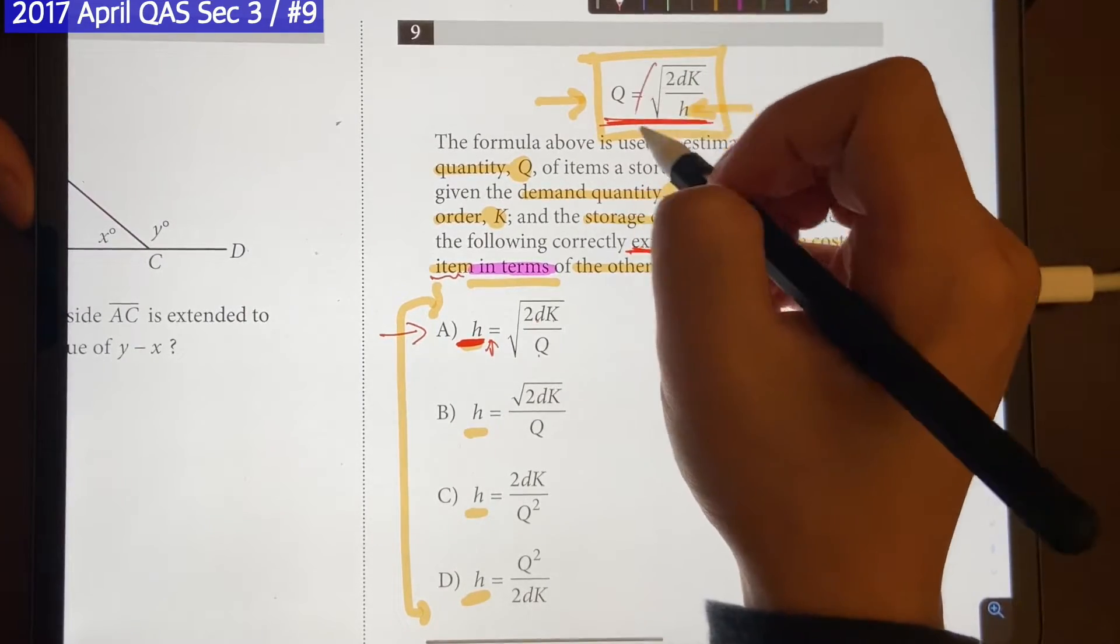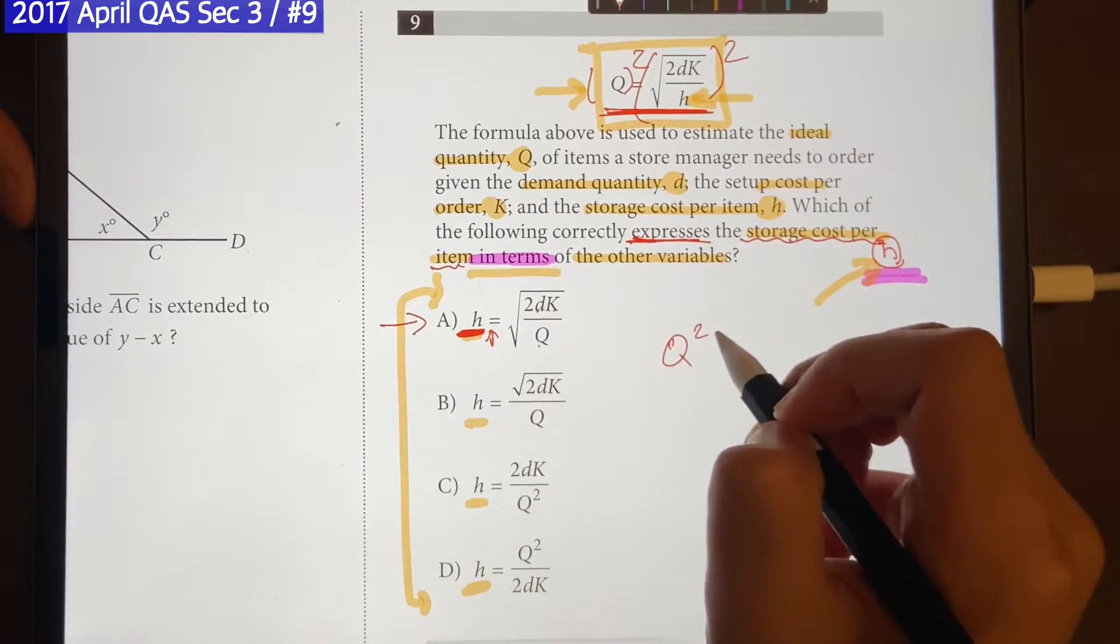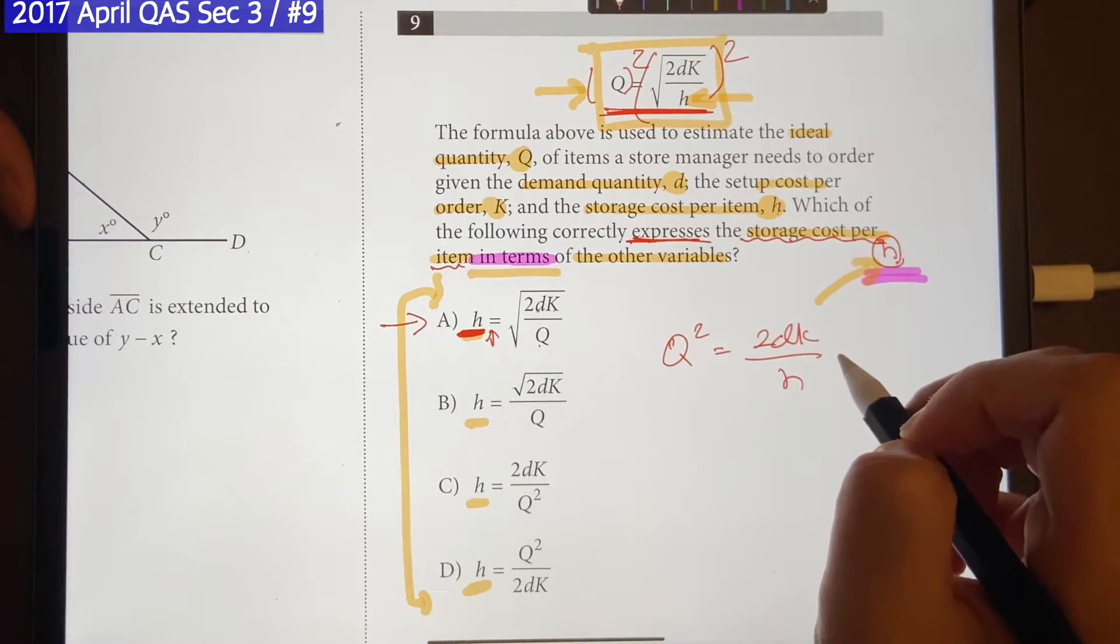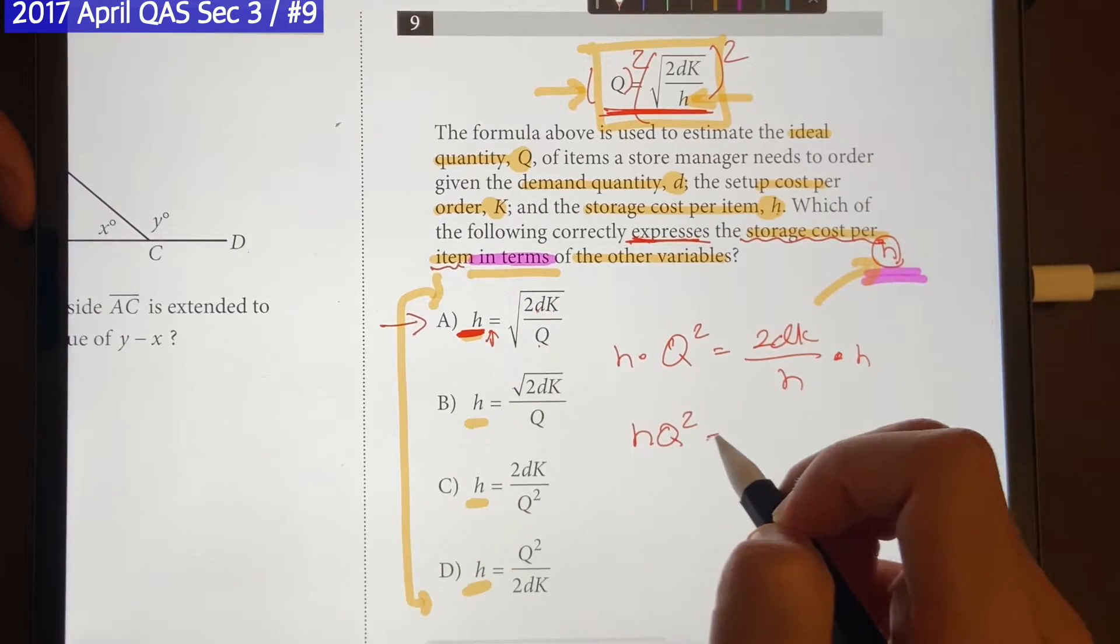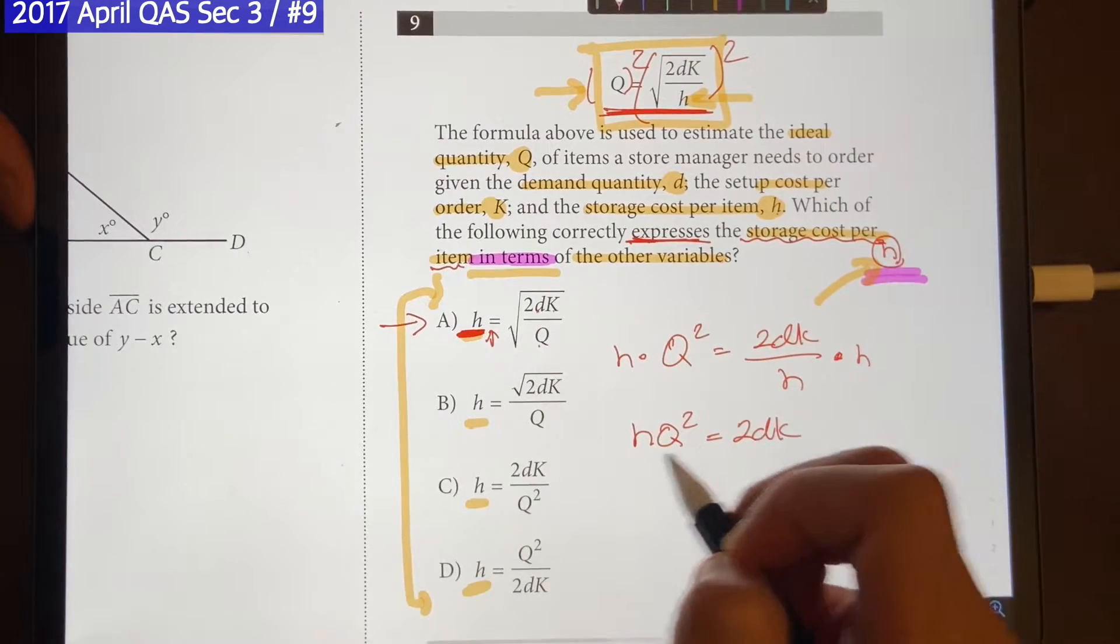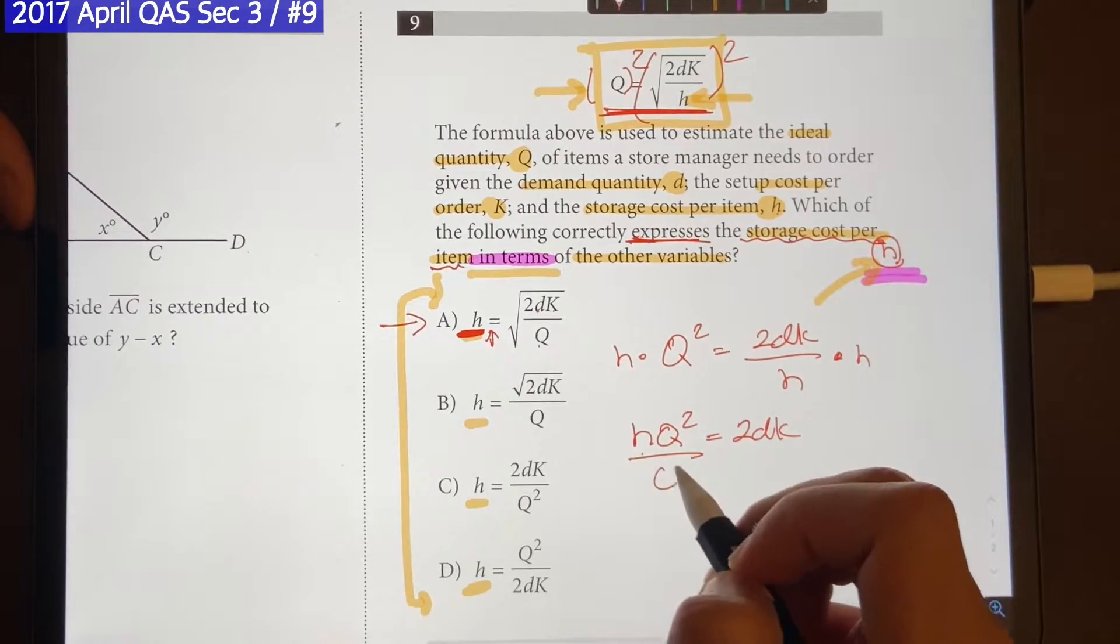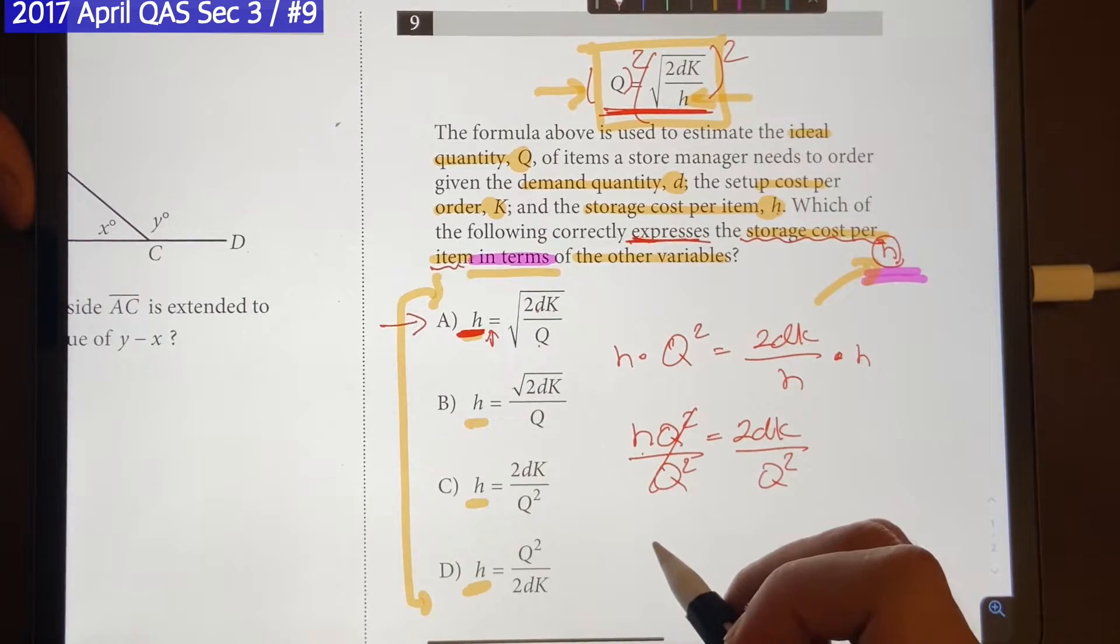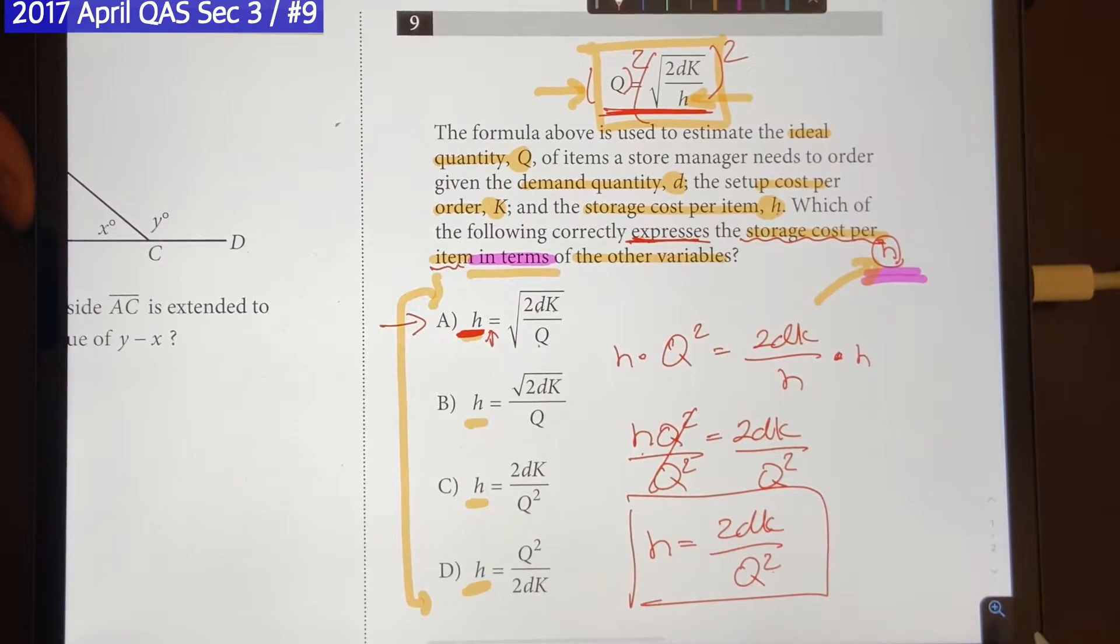The first thing we're going to do is remove the square root so that we can move H out, which will give us Q squared is equal to 2DK over H. And we'll move H up by multiplying it on both sides. It's going to be HQ squared is equal to 2DK. And we're going to leave H alone because that's what we're trying to do by dividing by Q squared on both sides. That will cancel out. We're going to be left with H is equal to 2DK over Q squared. That will be our answer.